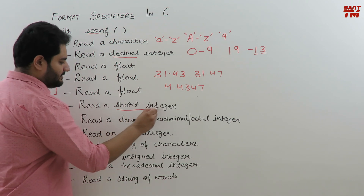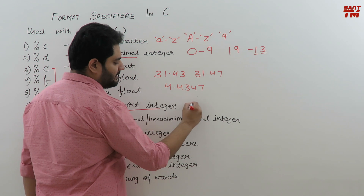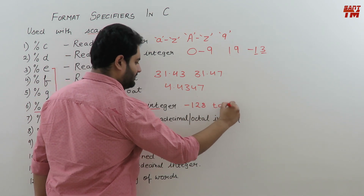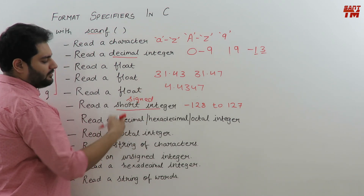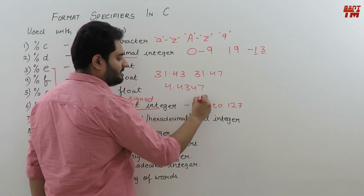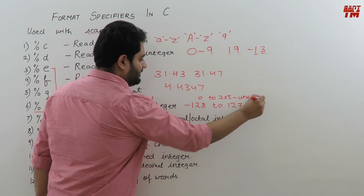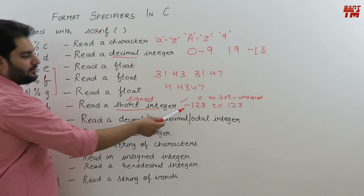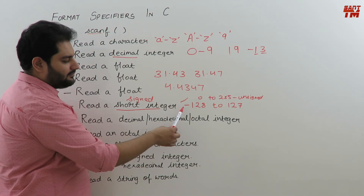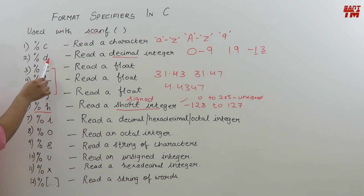%h is used to read a short integer. Short integers are numbers in the range -128 to 127 for signed short integers, or 0 to 255 for unsigned short integers. %h is used to read integers within this range. If you need to scan a value like -130, which is out of bounds for %h, you can use %d instead, as %d can perfectly read -130.